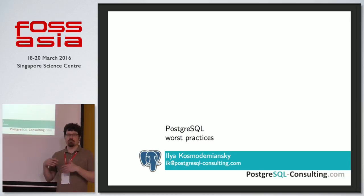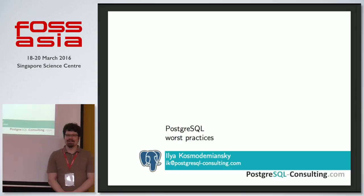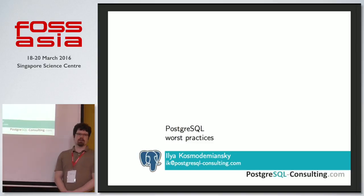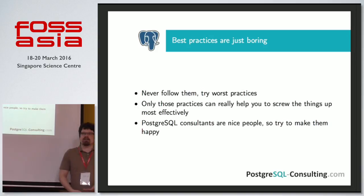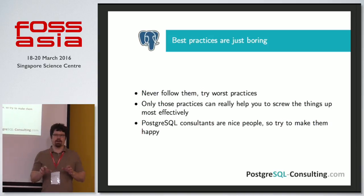I tried to go through them very briefly because I have lots of them, about 100 or something like that. But I tried to select for you about seven or eight really best worst practices. I do that quickly because you need to explain a lot and it's really hard to make people use best practices. But for worst practices, people usually adopt them themselves very quickly and effectively. Best practices are just boring, so you don't need to follow them — you need to implement worst practices, and they really help you make things very bad.